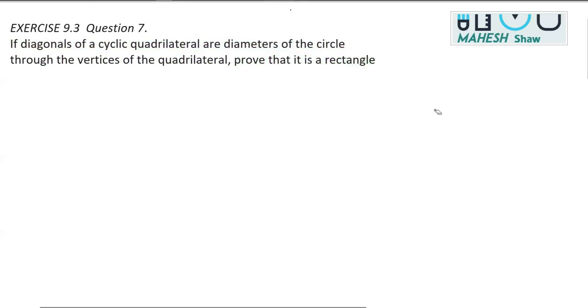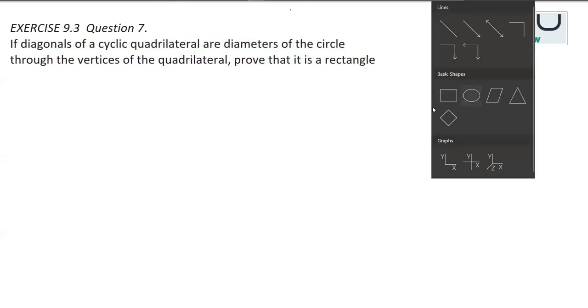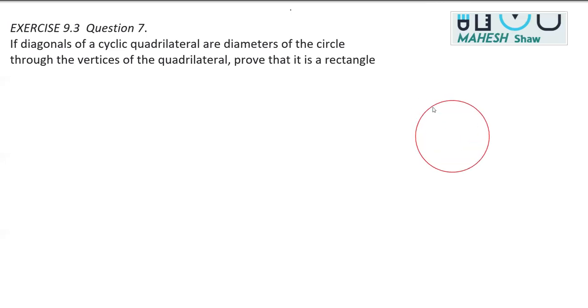So what we need to do is make a diagram here. First, I made a circle, and then I'm going to make a rectangle. Make sure it should look like a rectangle, although we are not going to consider this to be a rectangle initially. It becomes easier to prove if you make the figure a rectangle.